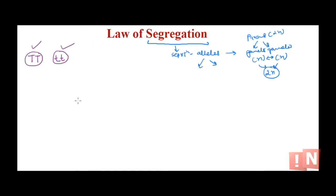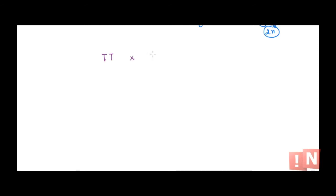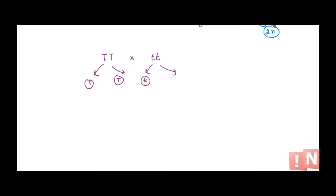Let's go one by one. Take the true breeding plants: capital T capital T (tall) and small t small t (dwarf). As per the law of segregation, when gametes are produced from these parents, the alleles get separated. The tall plant, which is homozygous TT, can produce only one kind of gamete: capital T. And the dwarf plant can produce only one type of gamete: small t.